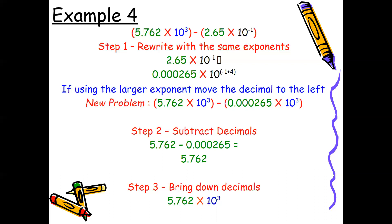Rewrite so both exponents are 10 to the 3rd. Because we're increasing, move the decimal to the left. Move 2.65 four places to the left. Now exponents are the same, subtract the coefficients, aligning the decimals. That gives 5.762 × 10³. Since 5 falls between 1 and 10, the answer is in scientific notation — bring down 10³ as the final answer.